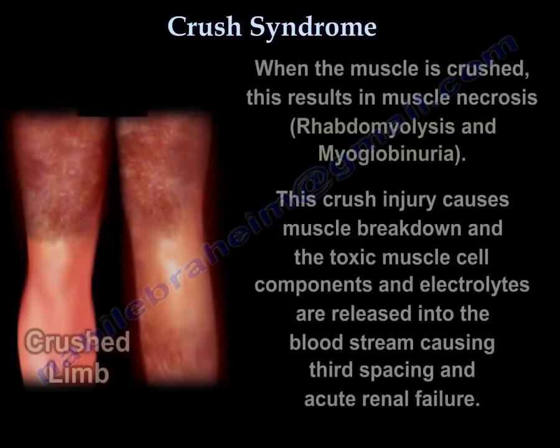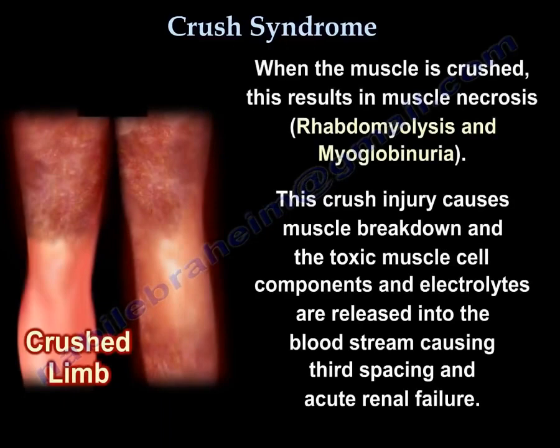When the muscle is crushed, it results in muscle necrosis, rhabdomyolysis, and myoglobinuria. The crush injury causes muscle breakdown, and the toxic muscle cell components and electrolytes are released into the bloodstream, causing third spacing and acute renal failure.